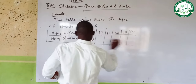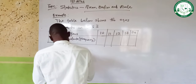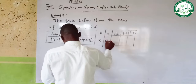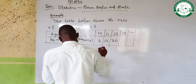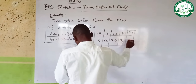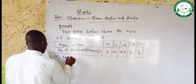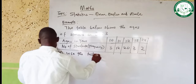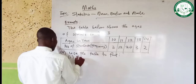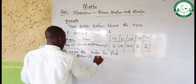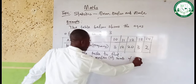After our frequency, we have: age 10 has frequency 3, age 11 has frequency 12, age 12 has frequency 20, age 13 has frequency 30, and age 14 has frequency 2. We are asked to use the table to find quartile 1, quartile 2 (median), quartile 3, and the mode of the distribution.